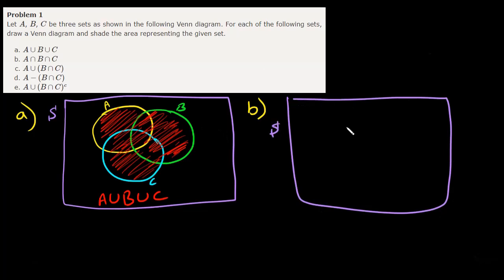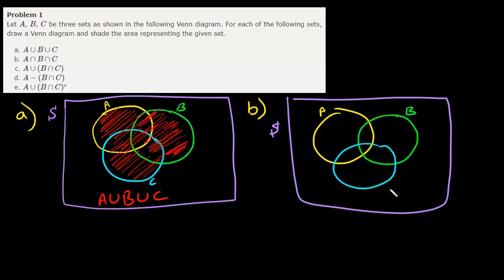For part B we have the intersection. This is my sample space and I have A, B, and C. What does intersection mean? Intersection means 'and,' so we need to belong to A and B and C. There's only one little spot that belongs to all three and that's right here in the center. If you want to belong to all three then you have to be right here in this red spot in the center.